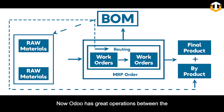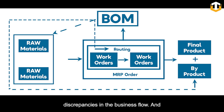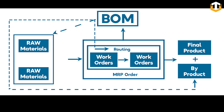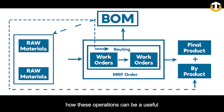Odoo has great integration between modules — we can manage sales, production, and deliveries without any discrepancies in the business flow. To make operations easier, we can set up automatic actions in Odoo triggered when a customer buys a product. These actions can create manufacturing orders and delivery orders, saving a lot of time.